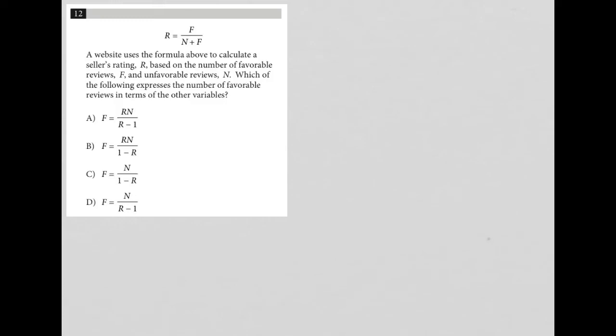This question says a website uses the formula above to calculate a seller's rating, R, based on the number of favorable reviews, F, and unfavorable reviews, N. So I'm going to write this down. R equals F over N plus F. Now I know what the R and the N and the F represent.